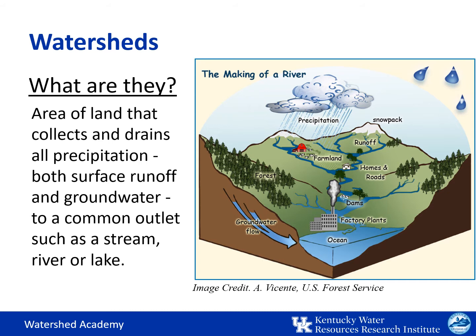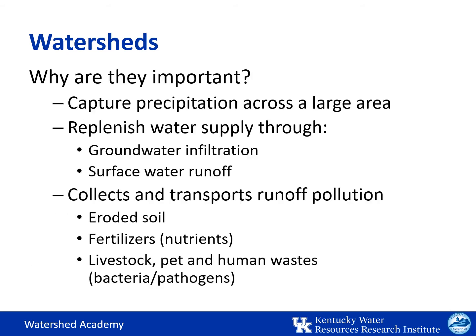Next, let's take a look at watersheds. Watersheds are the areas of land that collect and drain all the precipitation — both the surface runoff and the groundwater — to a common water body or outlet such as a stream, river, or lake. Note how water flows with gravity from high to low points in the landscape, where it collects to form these water bodies. Watersheds are important because they capture precipitation and help recharge the water supply through groundwater infiltration and surface water runoff.